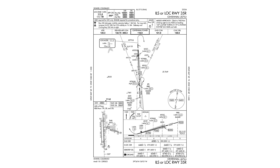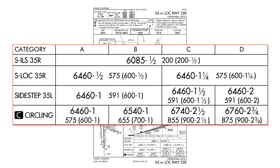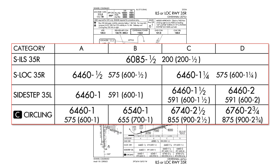Here's the approach plate for the ILS 3-5 right. Looking at the minimums section, we see minimums for the ILS as well as for the localizer only. Below that, we have a sidestep 3-5 left minimum. This approach allows for a sidestep to be made from 3-5 right to 3-5 left.